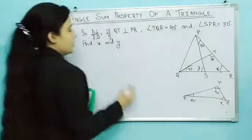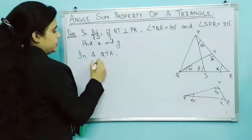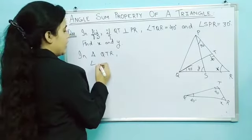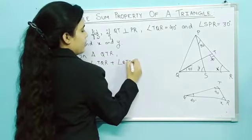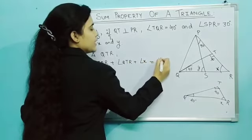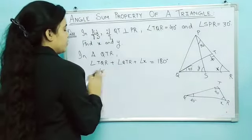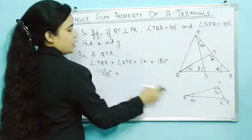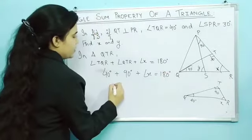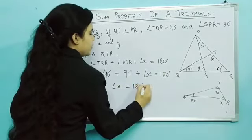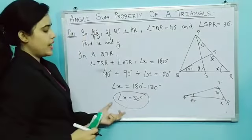In triangle QTR, the sum of all the angles of a triangle is equal to 180 degrees. So angle TQR plus angle QTR plus angle x is equal to 180 degrees. This is 40 degrees, QTR is 90 degrees, and angle x we need to find. So this is 130, and angle x is equal to 180 minus 130, so this is 50 degrees.